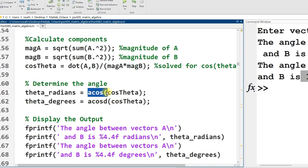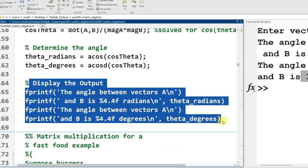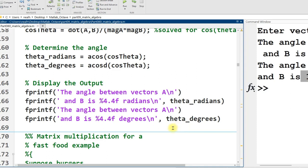And then, finally, arc cosine, or inverse cosine, of our variable, is our solution in radians. A cos d, d for degrees, is our solution in degrees. And then I display it all out right here. And that is how to use the law of cosines to find the angle between vectors in MATLAB. And that's all for this video.